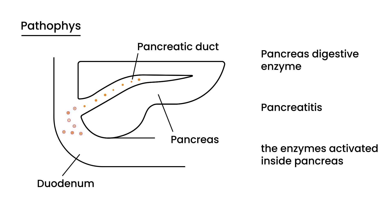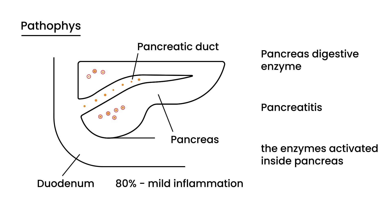Instead of the normal scenario, you have active enzymes damaging the actual tissue of the pancreas. About 80% of the time this causes mild inflammation, but 20% of the time it can cause tissue necrosis, which represents the most severe cases.